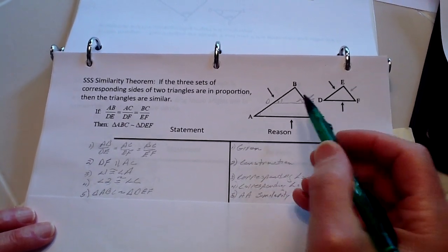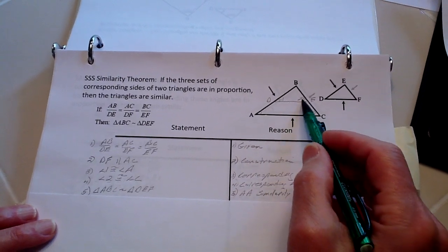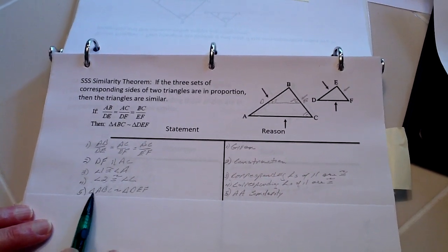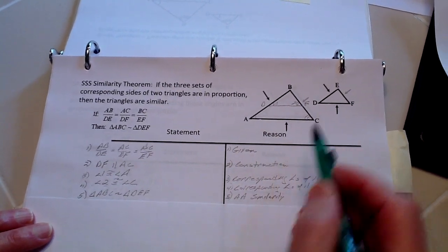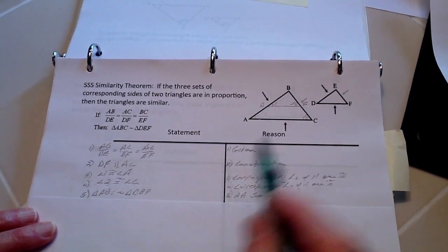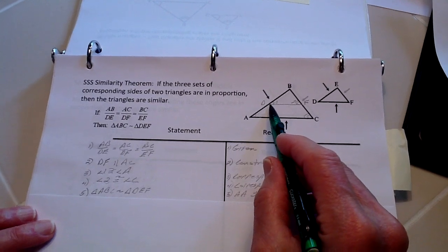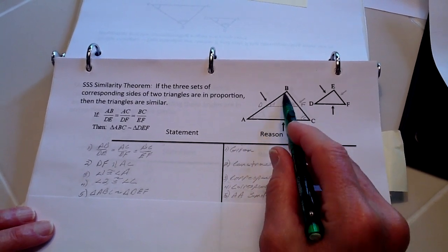Therefore, from that, triangle ABC is going to be congruent to triangle DFB.